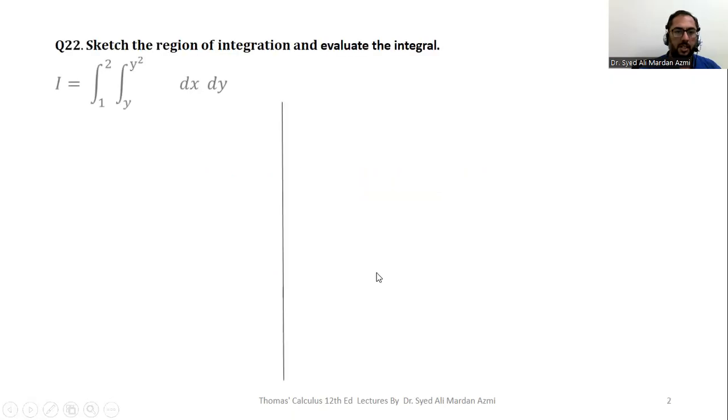The question is: sketch the region of integration and evaluate the integral. Here, the limits of x are y to y squared and the limits of y are 1 to 2. x is our inner variable and y is our outer variable. In double integrals, we will always solve the inner integral first and then apply the outer integral on the results.